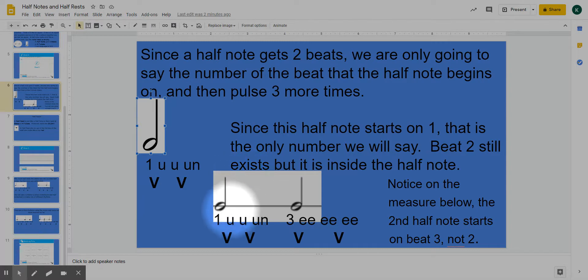Now, here we have a measure that has two half notes. So two half notes, each half note is going to be two beats, or two foot taps, and get four pulses. So you can see the four pulses. Here's one, two, three, four.